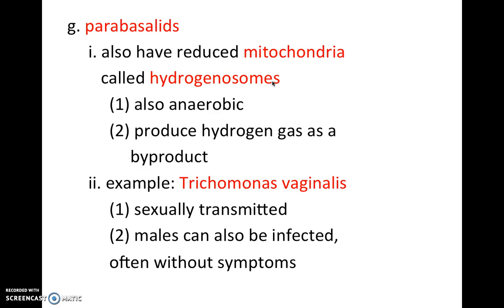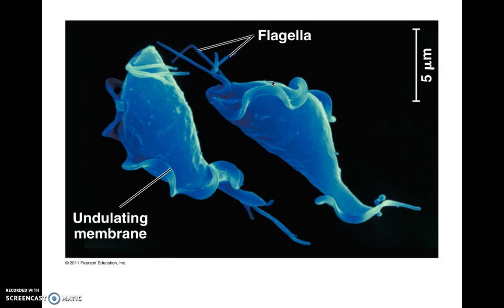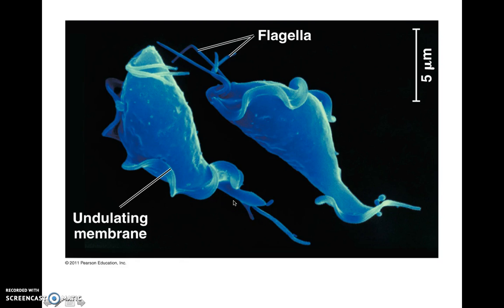On the microscope image you can see the excavated side, the multiple flagella — all the key characteristics for Excavates. So your supergroup is Excavates, your subgroup is parabasalids, and the example for parabasalids is Trichomonas vaginalis.